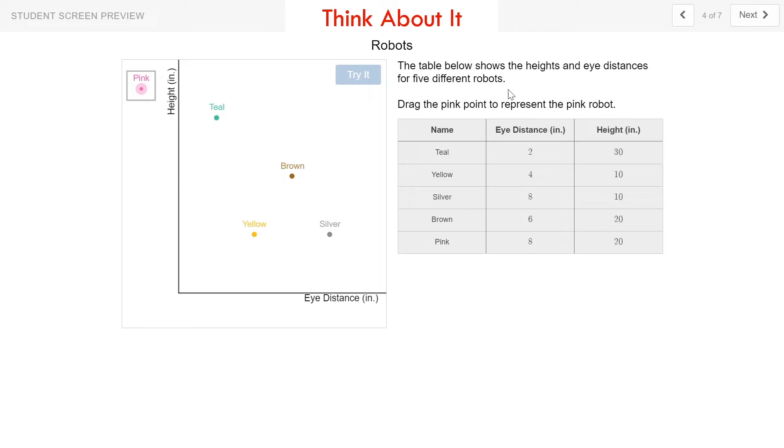On this screen, we're asked to show a new robot. We have five robots: teal, yellow, silver, brown, and pink. The teal, yellow, silver, and brown are already plotted on this scatterplot. And I need to drag the pink point to represent the pink robot. So looking down here in the table, the pink robot has an eye distance of 8 and a height of 20.